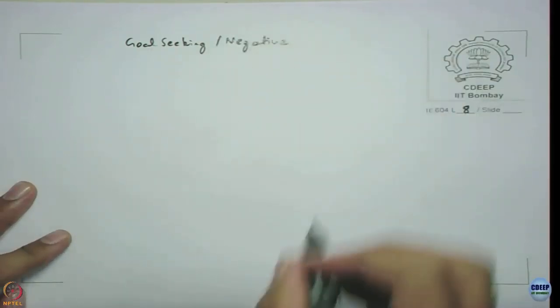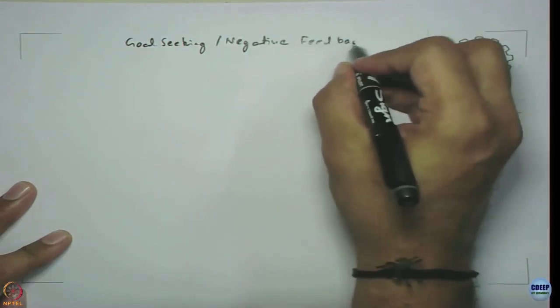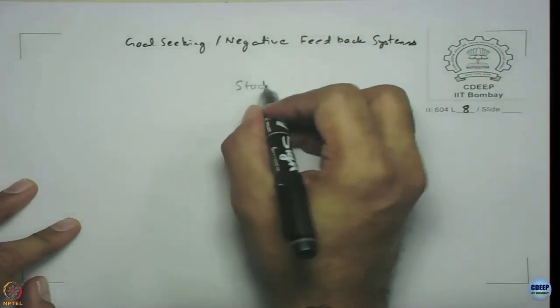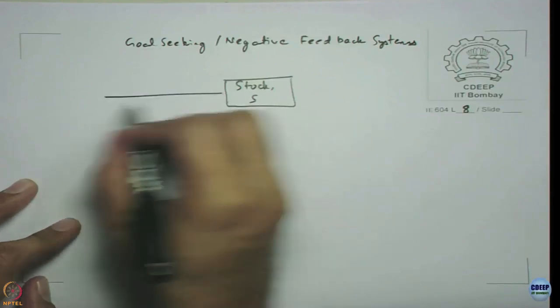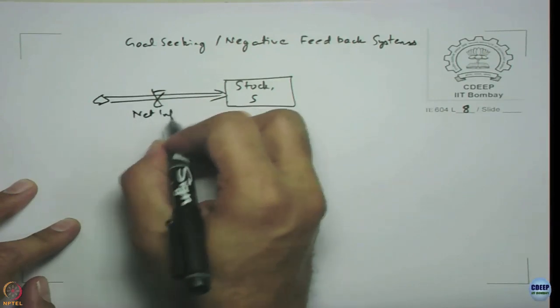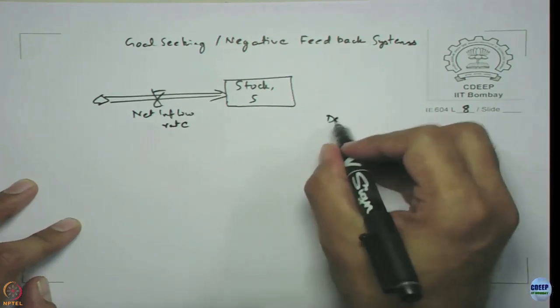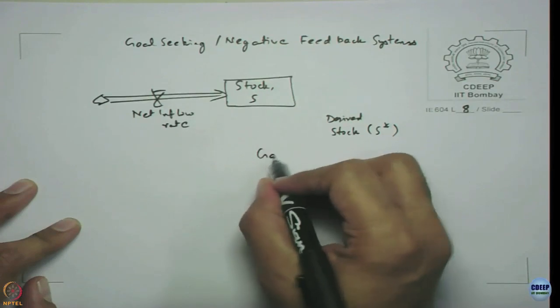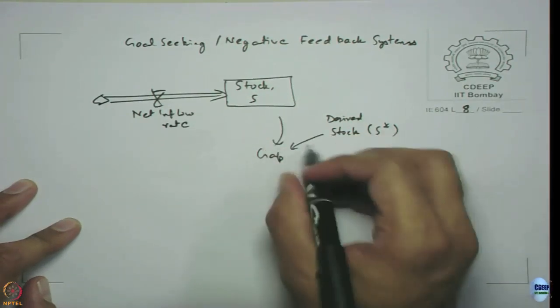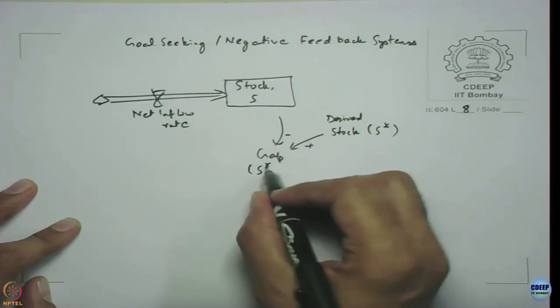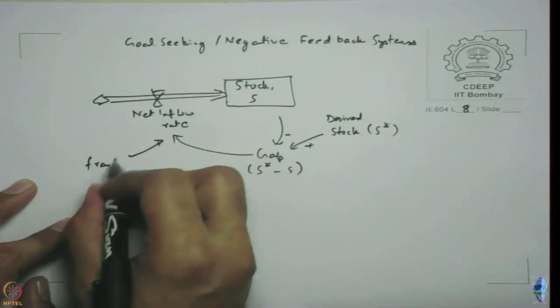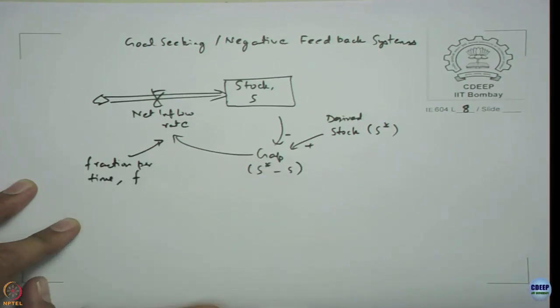Goal-seeking or negative feedback systems, as we just saw, have a stock S which is affected by some net inflow rate. I have desired stock S star. I have a gap, which we are taking as S star minus S. You can simply denote a fraction per time, denoted by symbol f as shown here.